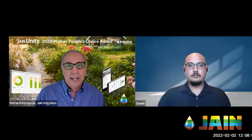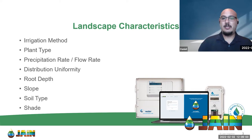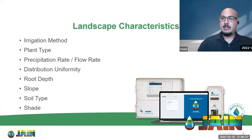Here are our landscape characteristics — this is the information we give our smart controller so it knows what's out in the field, what it's watering, when to water, and how it's being watered. First: irrigation method. How we're putting that water out there — whether it's a sprinkler, a drip system, or a bubbler — all change how fast we can put that water down. And of course, plant type determines how drought tolerant it is and how frequently we need to water.